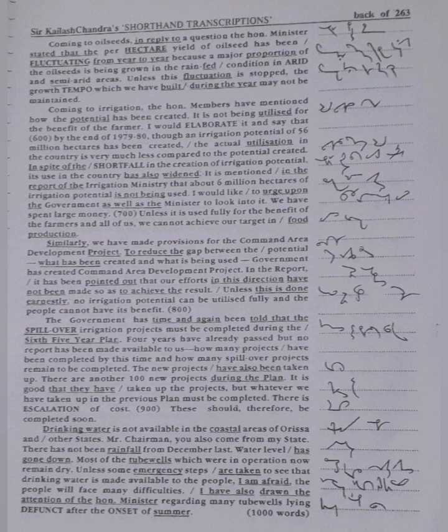The government has time and again been told that the spillover irrigation projects must be completed during the sixth five-year plan. Four years have already passed but no report has been made available on how many projects have been completed and how many spillover projects remain. There are another 100 new projects during the plan. It is good that they have taken up the projects but whatever we have taken up in the previous plan must be completed. There is escalation of cost. These should therefore be completed soon.